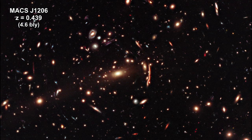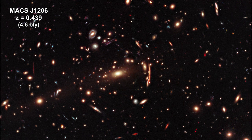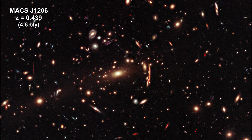The galaxy cluster MACS J1206, 4.6 billion light-years away, has produced 47 multiple images of 12 newly identified more distant galaxies as seen in this Hubble picture.